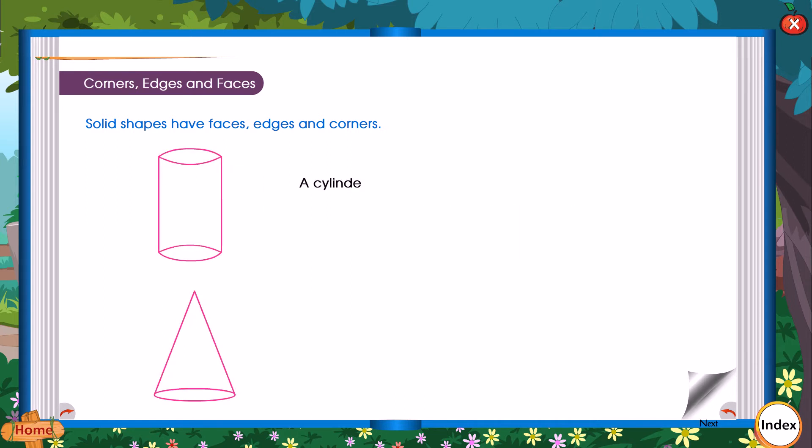A cylinder has 3 faces. It has 2 plane faces and 1 curved face. It has 2 edges and no corners.